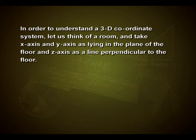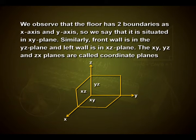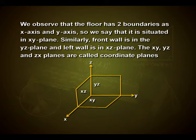In order to understand a three dimensional coordinate system, let us think of a room. Take the x-axis and y-axis as lying in the plane of the floor and the z-axis as the line perpendicular to the floor. We observe that the floor has two boundaries as x-axis and y-axis, so we say it is situated in the xy plane. Similarly, the front wall is in the yz plane and the left wall is in the xz plane.